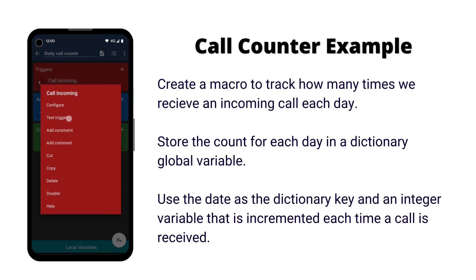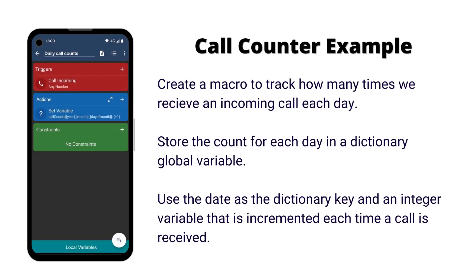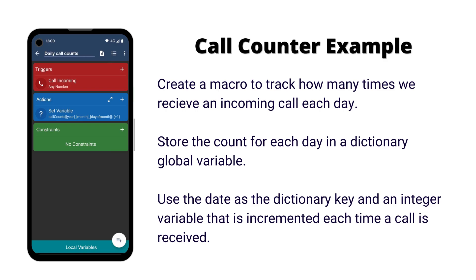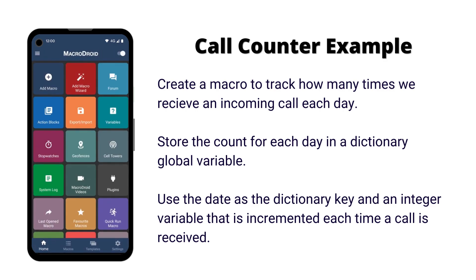When we test the trigger three times, we should see our global variable have an entry for today's date with a count of three.